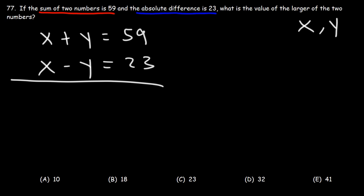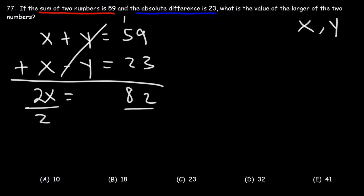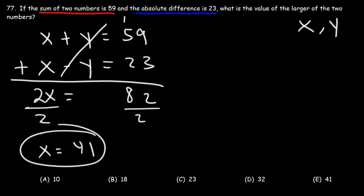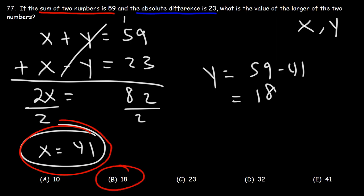Using the elimination method, we add the two equations. y and negative y cancel. We get x + x = 2x, and 59 + 23: 3 + 9 = 12, carry 1, 1 + 5 + 2 = 8, so 82. Thus 2x = 82. Dividing both sides by 2, x = 41. That's the larger number. The smaller number y = 59 − 41 = 18. The answer we're looking for is x = 41, so E is correct.